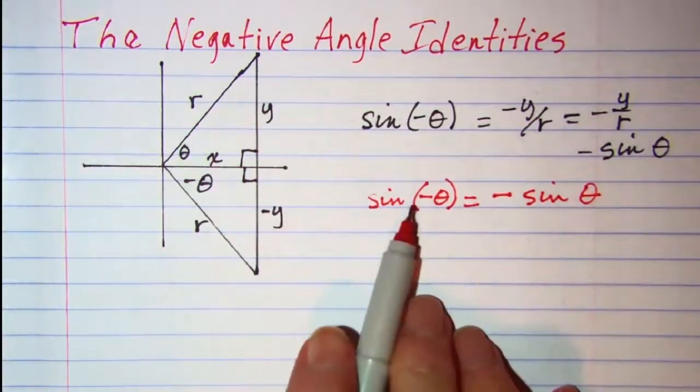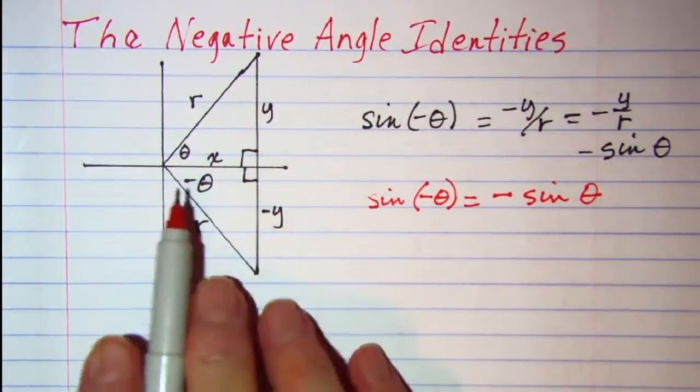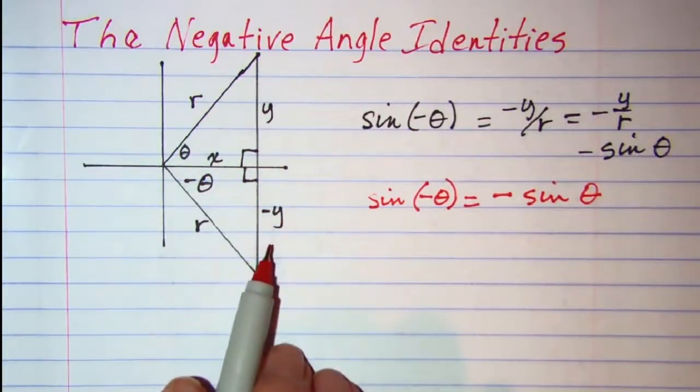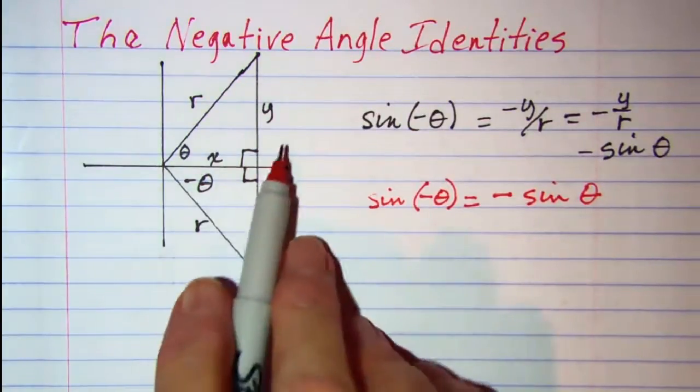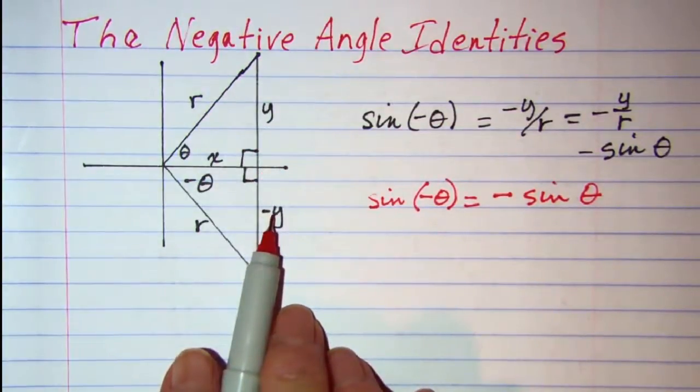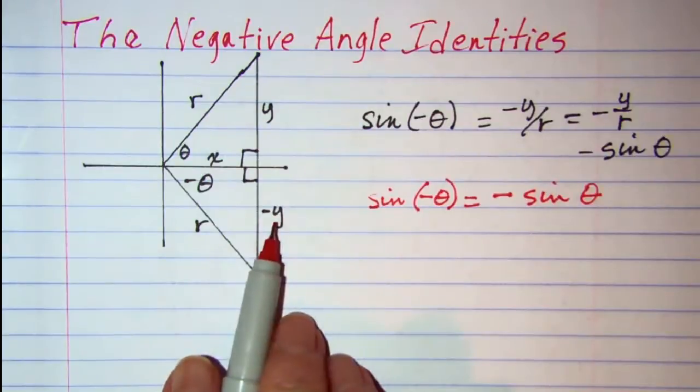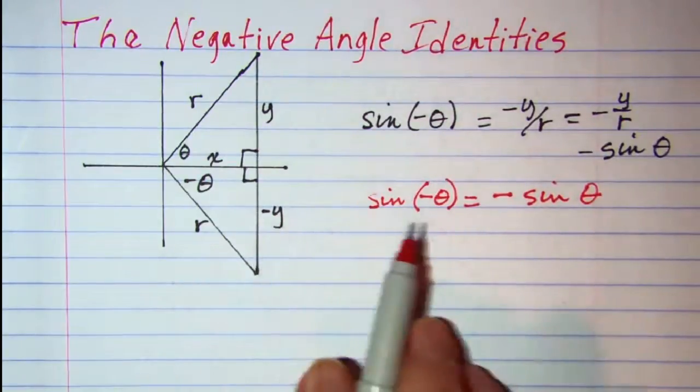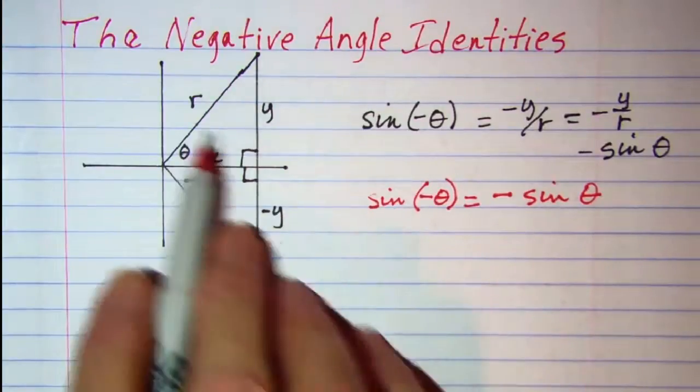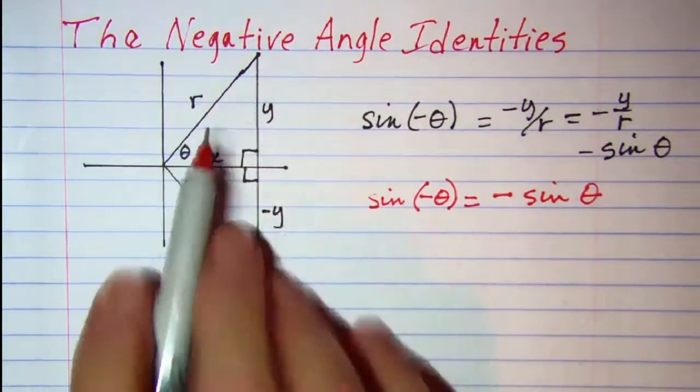So you can see then from our reference triangle that the y value is the negative of this y value, and so any of our trig functions that have a y in them will be the negative of the trig function in the first quadrant.